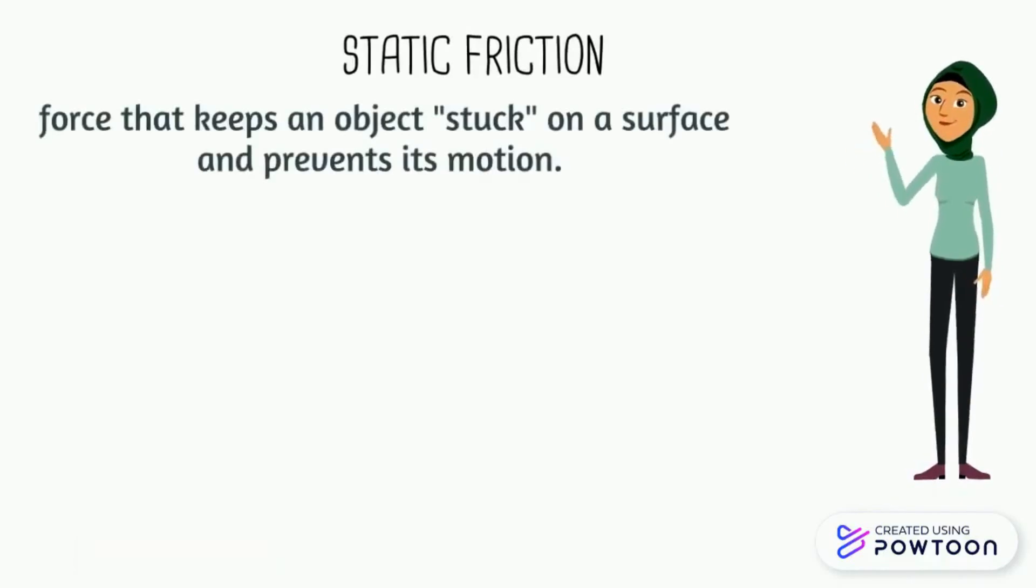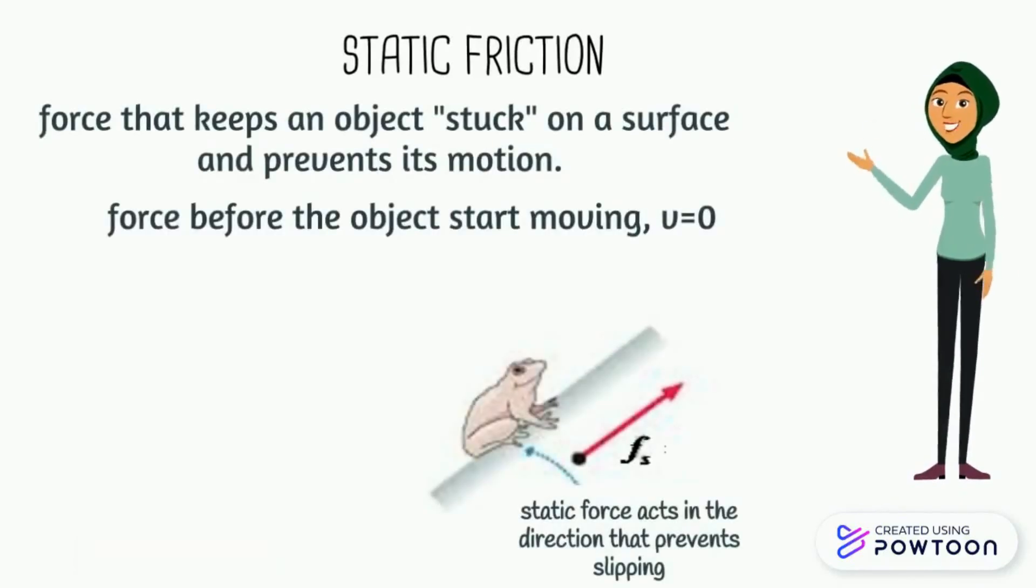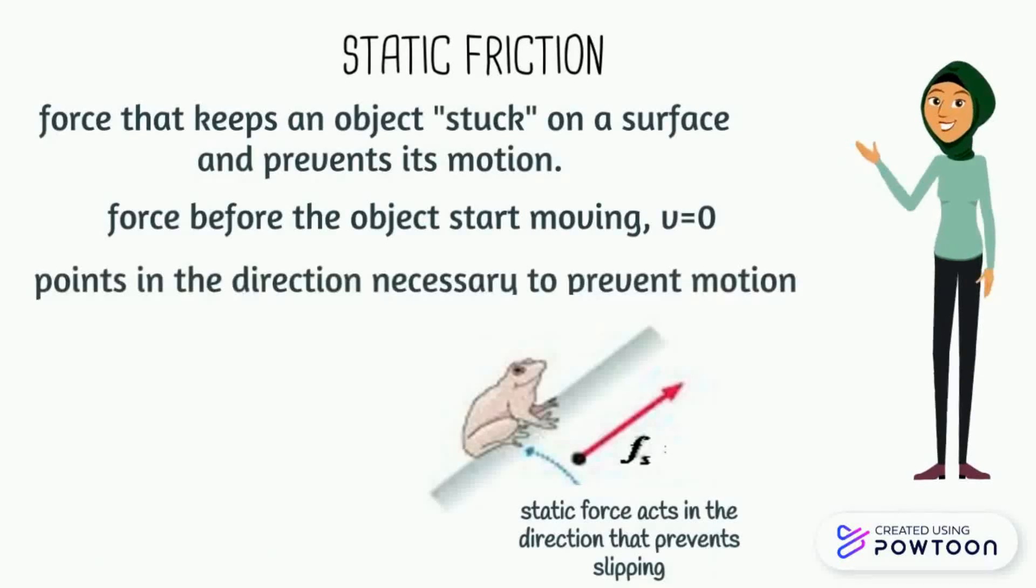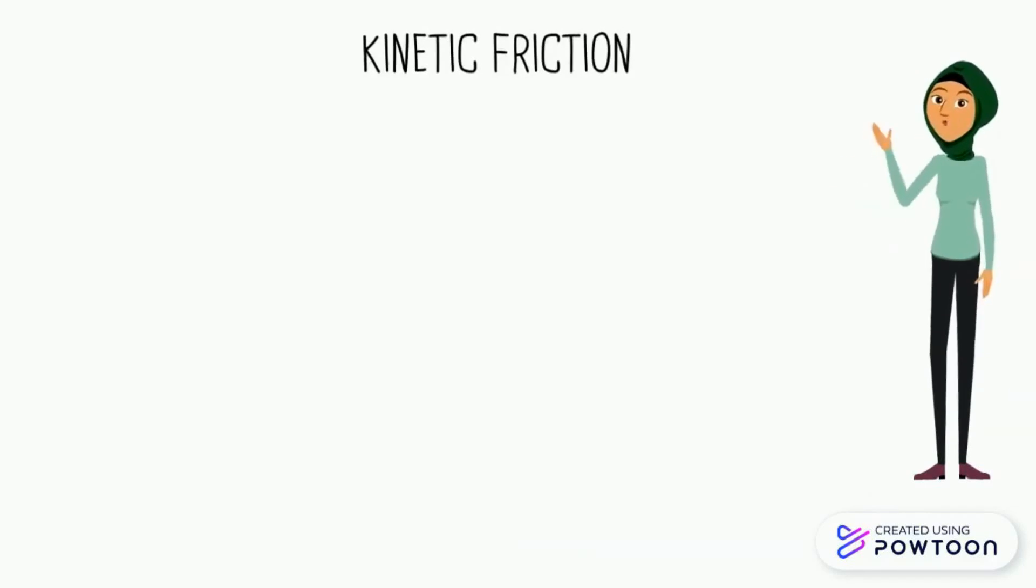Static friction is a force that prevents the object from moving. Literally, the force when the velocity is zero. The direction is always in such a way that it prevents the object from moving, and the symbol is f subscript s.